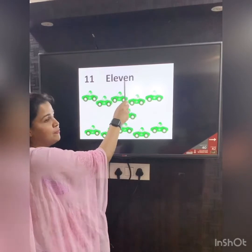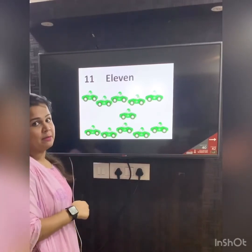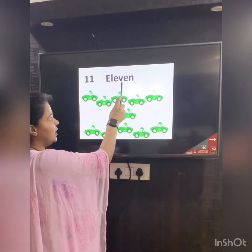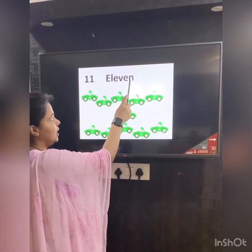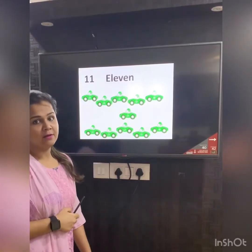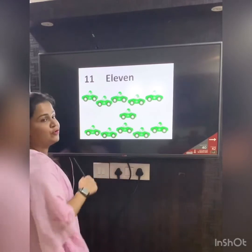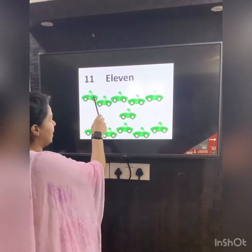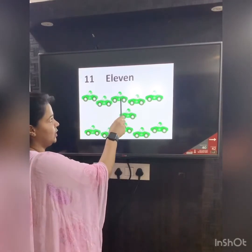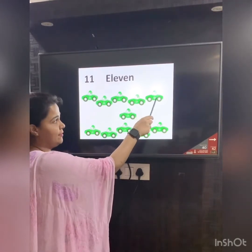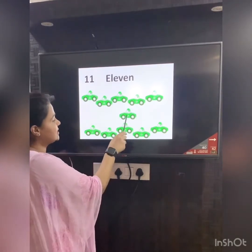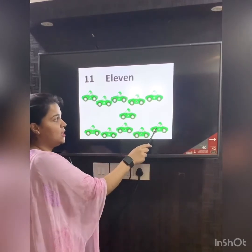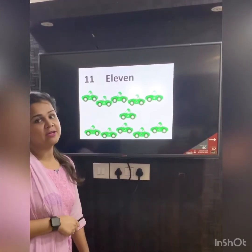This is the number name for 11. So let's see the number name first: E-L-E-V-E-N. 11. And we have green cars here. Let's count how many cars are in total: 1, 2, 3, 4, 5, 6, 7, 8, 9, 10, 11. 11 cars.